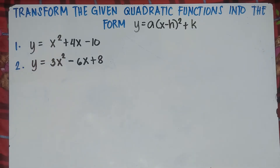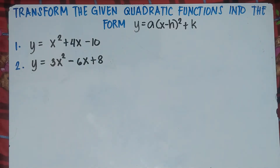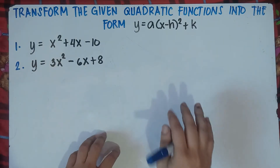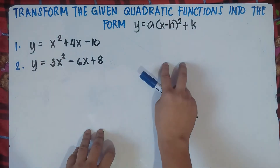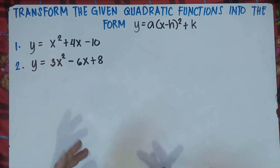Hi guys! Good day! It's me, Teacher MJ. Our topic for today is we're going to transform the given quadratic functions in the form y equals a quantity x minus h squared plus k. This is what we call the vertex form of quadratic function.